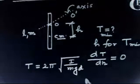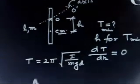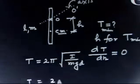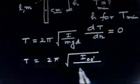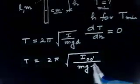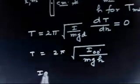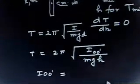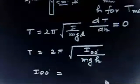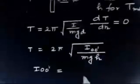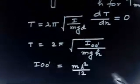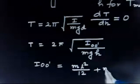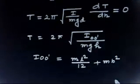Here D is the distance between center of mass and the point of suspension. So in this case, T = 2π√(I_OO' / MgH), where D = H. The moment of inertia I about OO' is found using the parallel axis theorem: I_OO' = ML²/12 + MH².